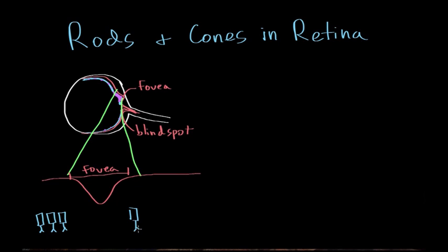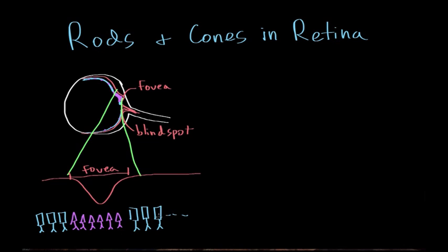There are more rods lining the periphery of the eye. Cones, on the other hand, are found in a really high concentration near the fovea — a whole bunch of cones at the fovea. In the periphery of the eye, there might be a few cones every now and then.